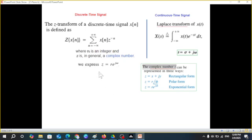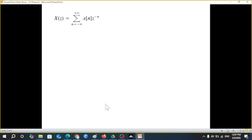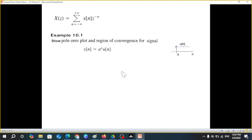So Z-transform, Z will be some magnitude R e^(jω). And this instead of Z bracket X[n] we simply could write X(z) and this formula remains same. We will follow this pattern. Now straightaway to the question. Pole-zero plot and region of convergence for signal a^n u[n].